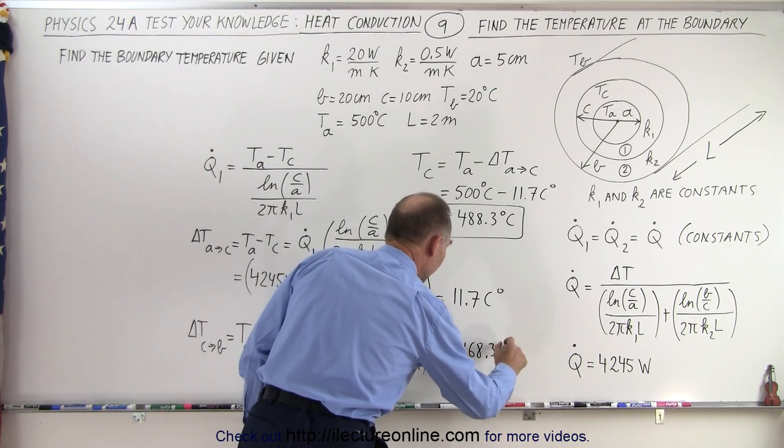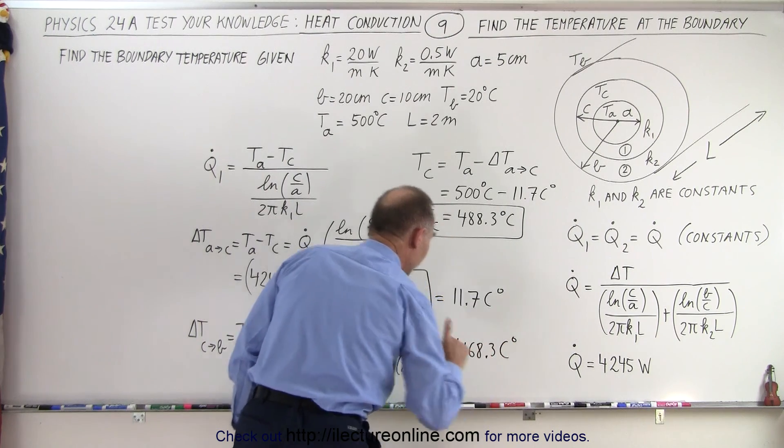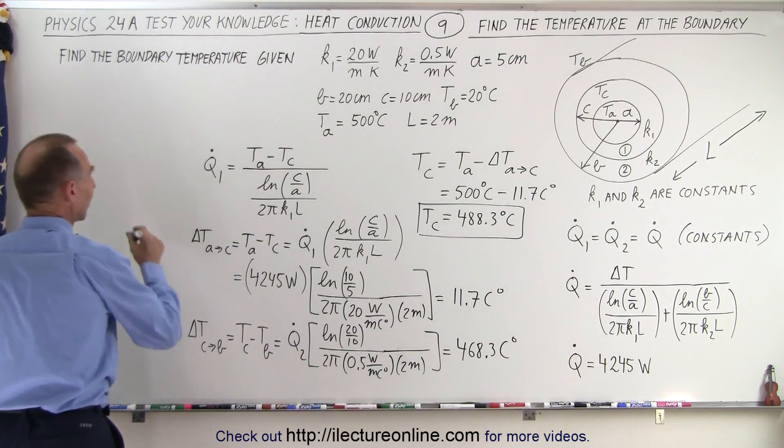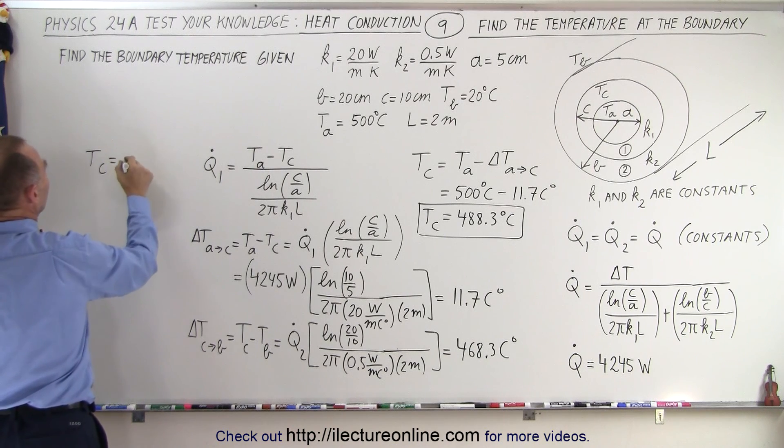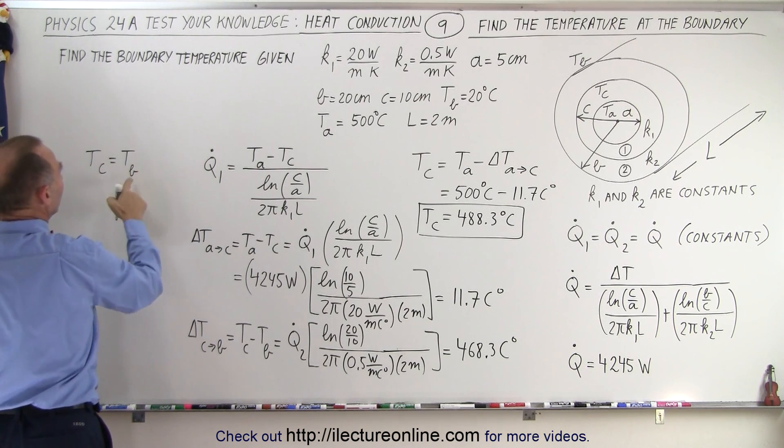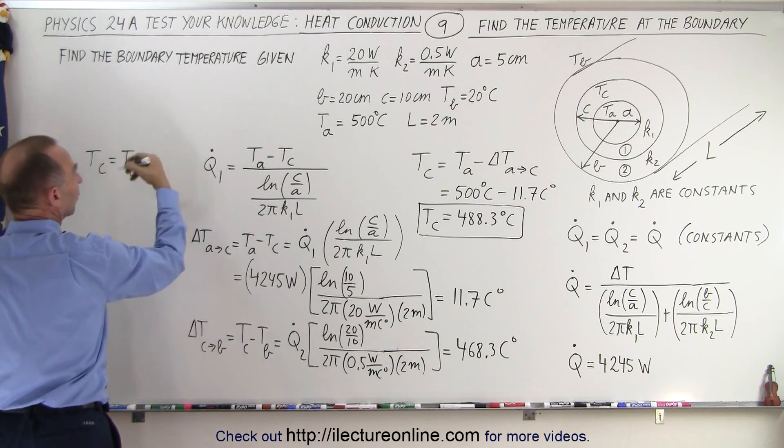468.3 centigrade degrees. And so now we can say is that T at C is equal to T at B, that's the outside temperature, plus the delta T.